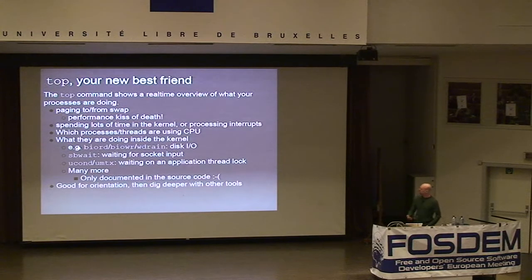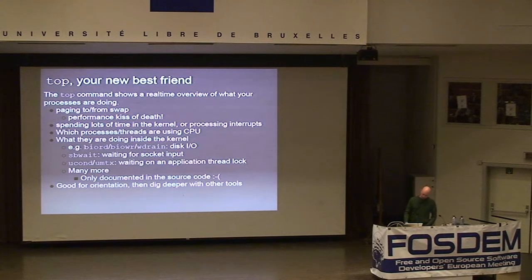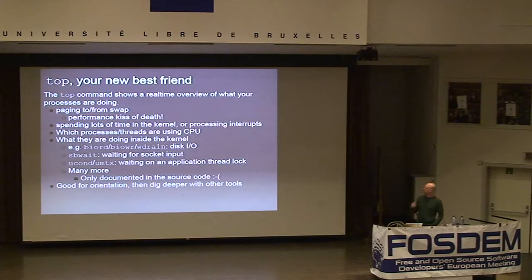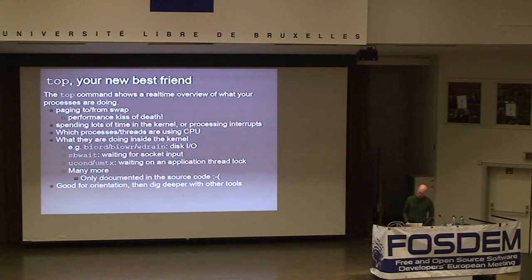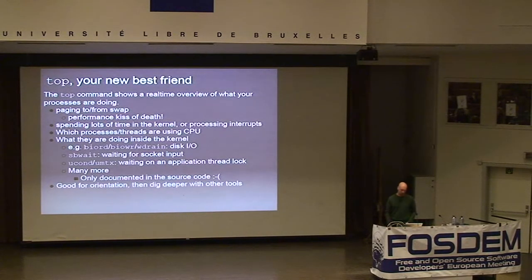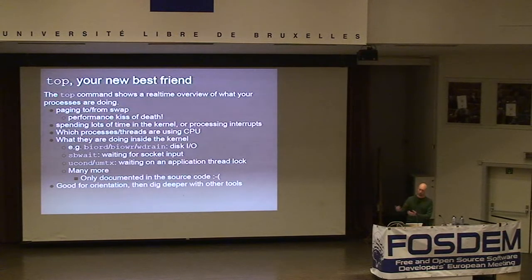Typical wait channels you might see are things like bioread, biowrite, writetrain — which tell you the process is blocked waiting for disk I/O. SB-wait shows up quite commonly and is usually not a performance issue; it just says a socket is waiting for input, which is the typical state of an idle network server. There are also wait channels indicating a threaded application waiting on a lock or condition variable — Yukon, Vmutex, and others. The only way to find out what they mean is to grep the kernel tree, but as you get experienced you start to recognize the important ones.